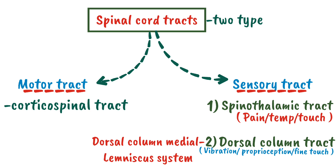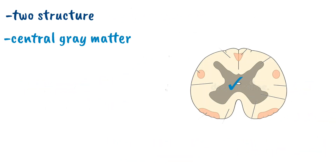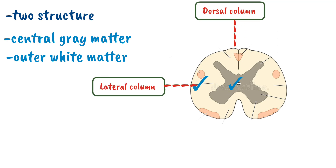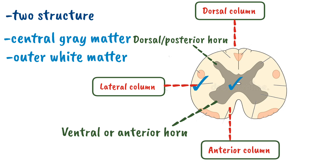Before going into the detail of individual tracts, let's study the anatomy of the spinal cord briefly. The spinal cord is divided into two structures: the central gray matter and the outer white matter. The white matter is further divided into three portions: the dorsal column, the lateral column, and the anterior column. The central gray matter is divided into the dorsal horn, or posterior horn, and the ventral horn, also called the anterior horn.